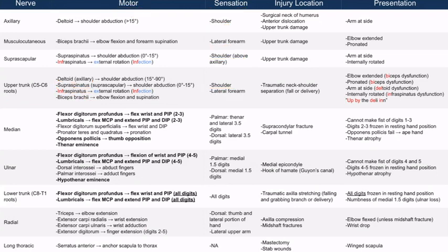Now let's talk about injury location. You can damage the upper trunk with traumatic neck and shoulder separation, which can occur during a traumatic fall or during delivery.